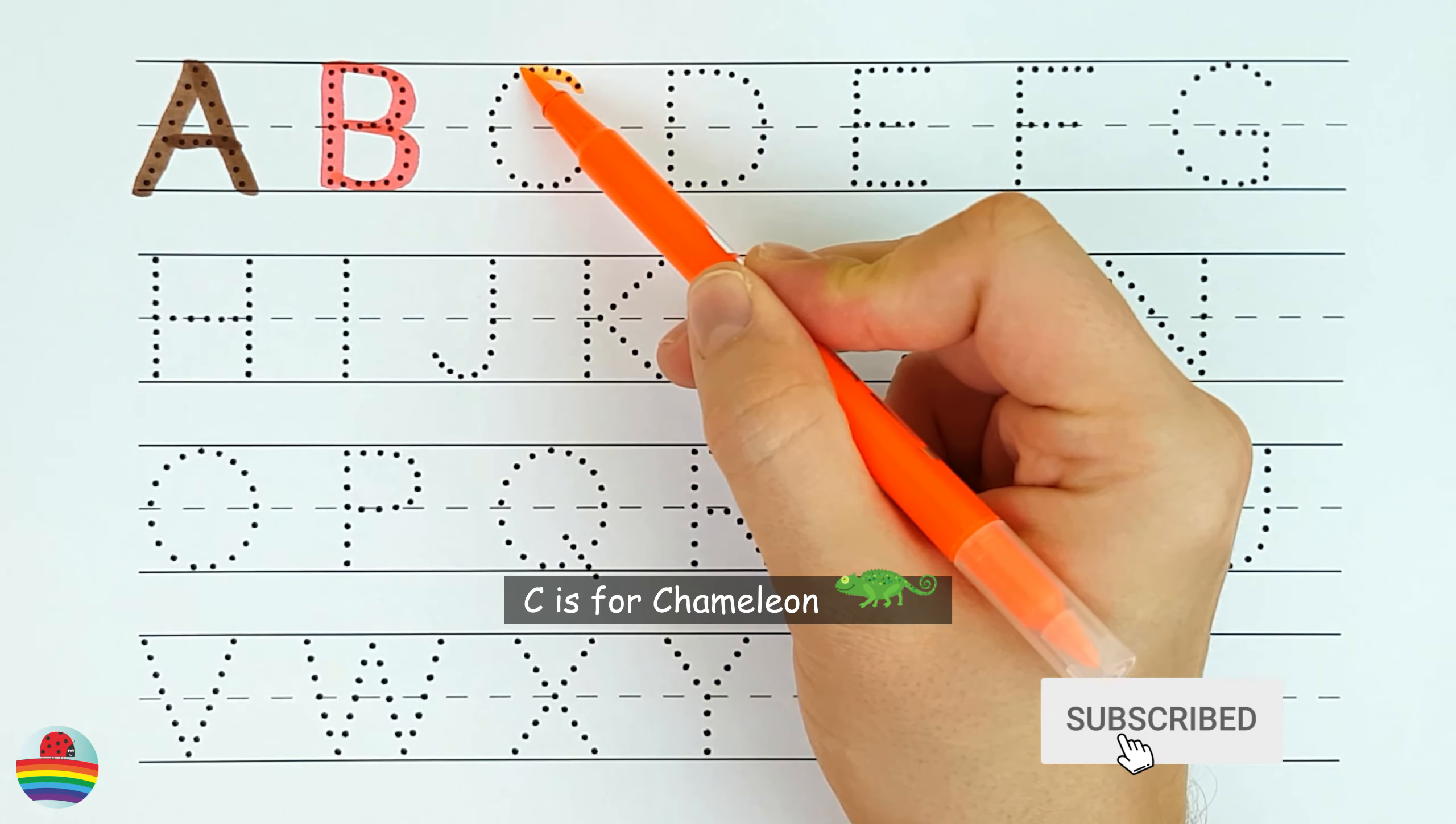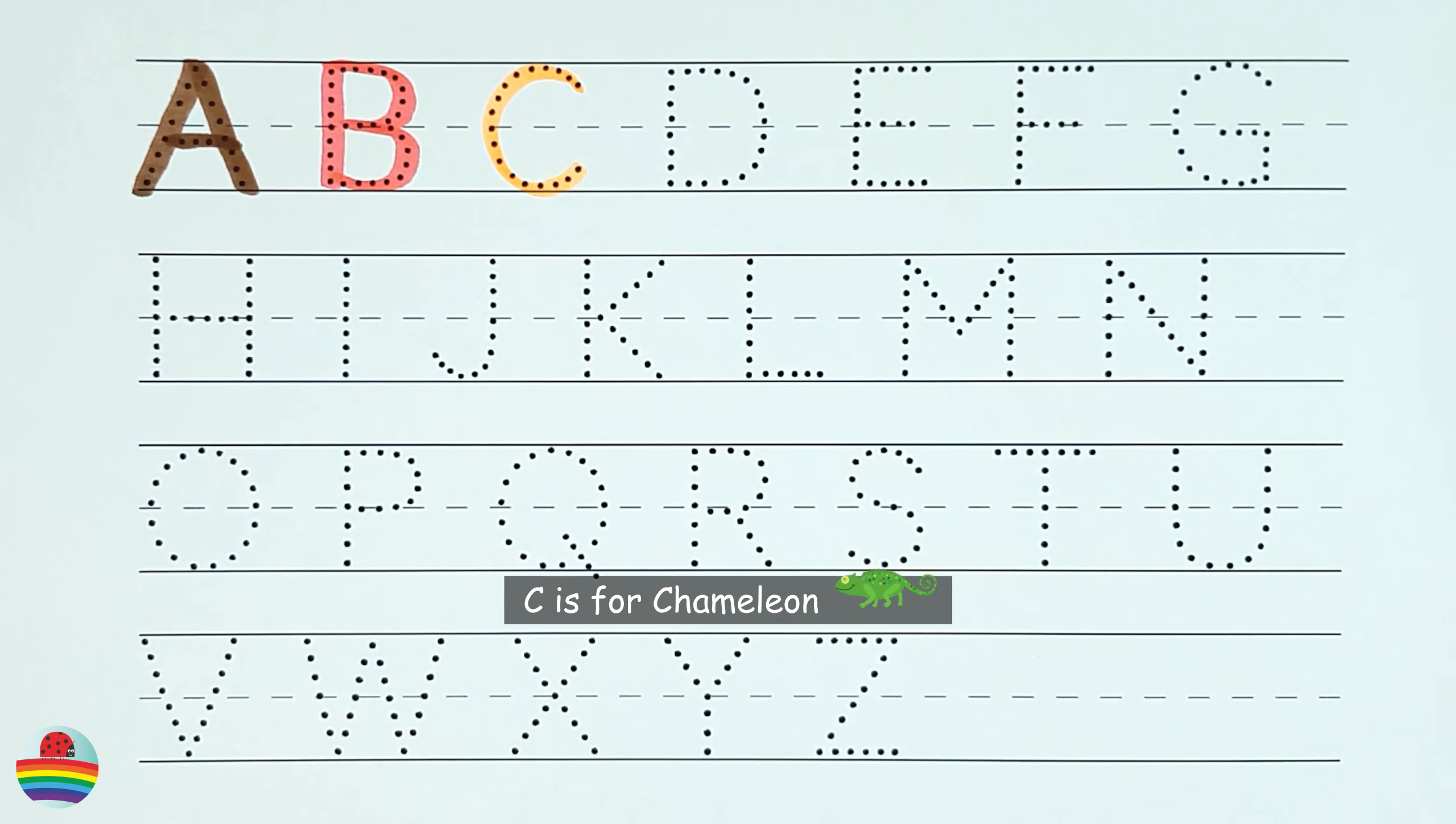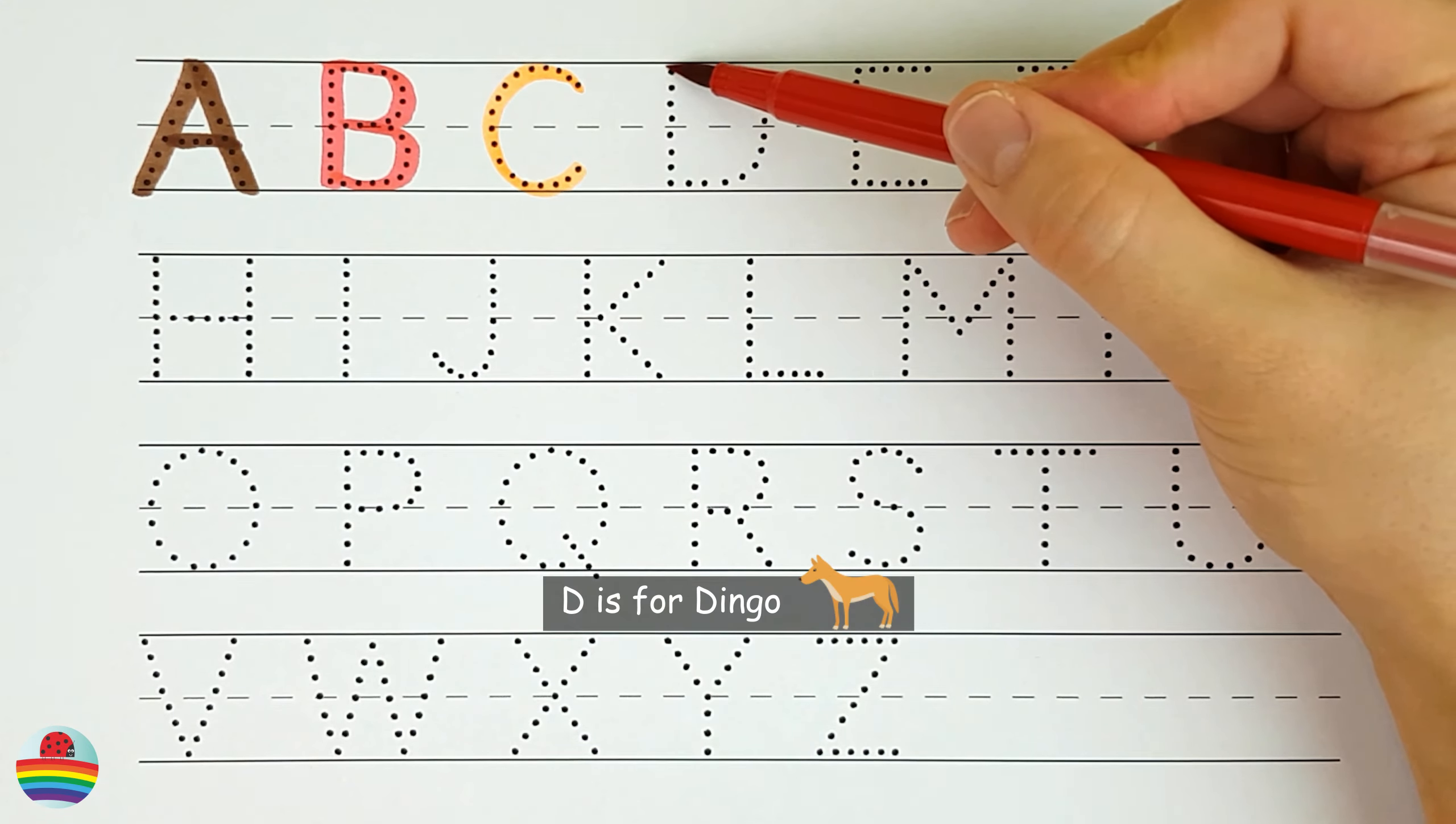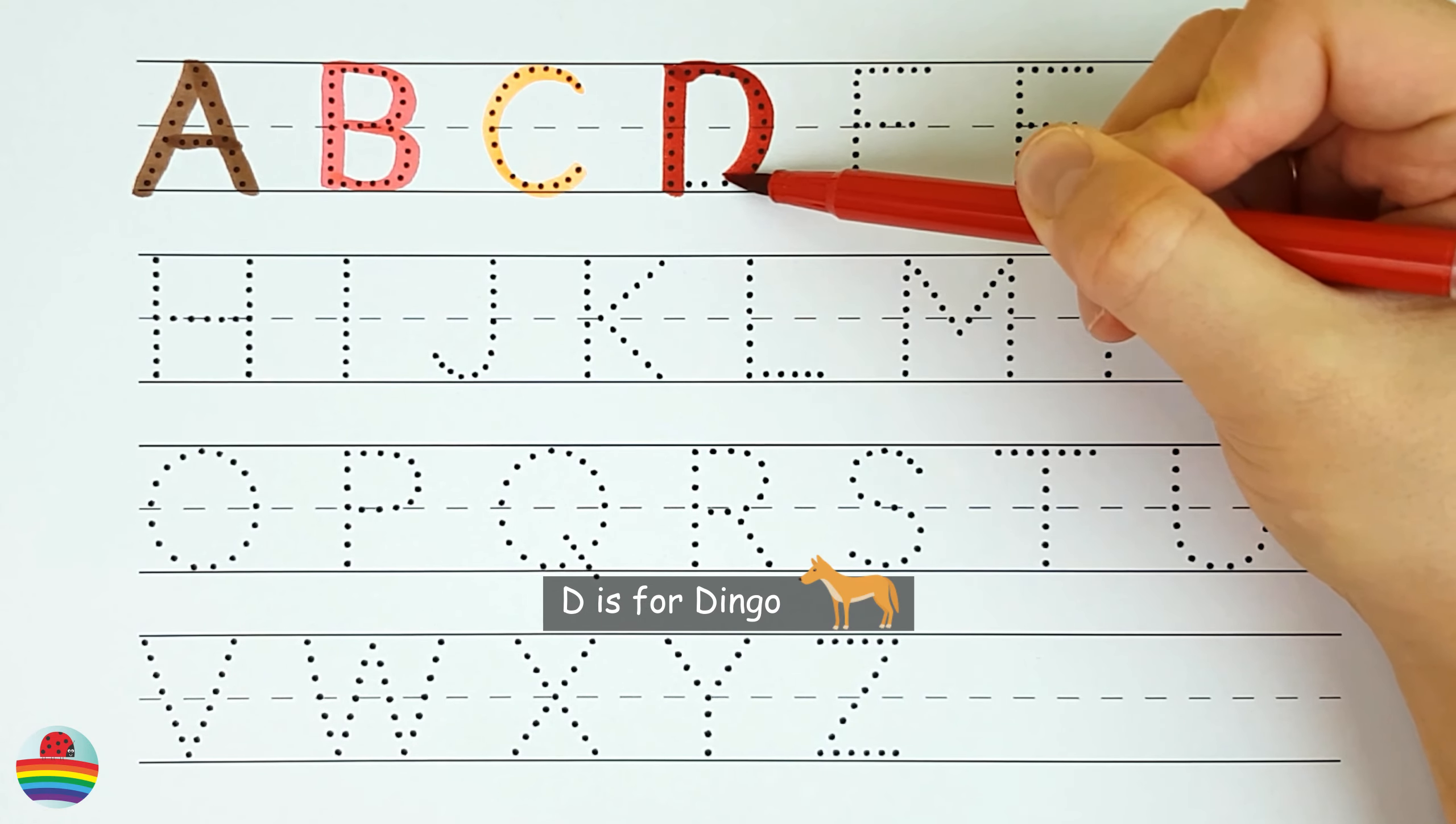C. C is for chameleon. D. D is for dingo.